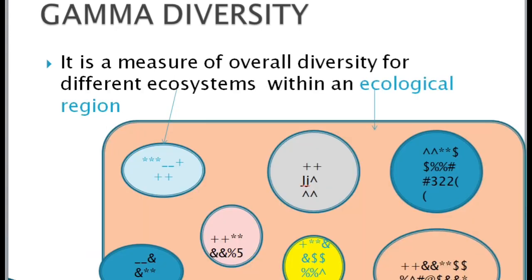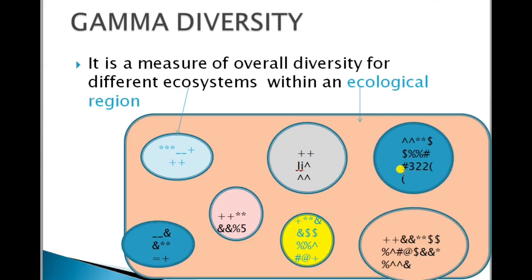Next is gamma diversity. It is a measure of the overall diversity of different ecosystems within an ecological region. This refers to a large area with different ecological communities with characteristic flora and fauna. In this large area, numerous ecosystems are present.